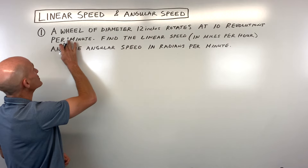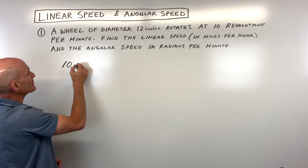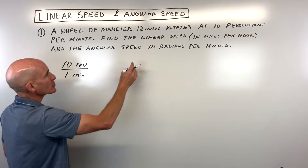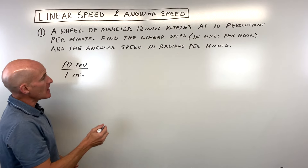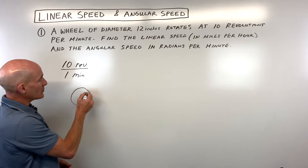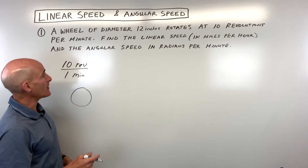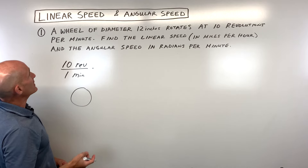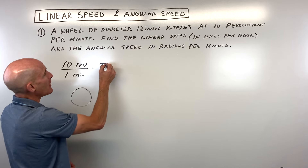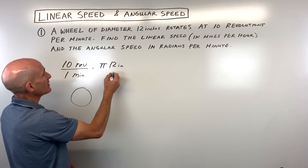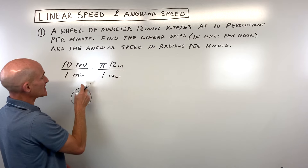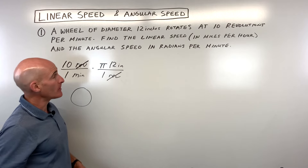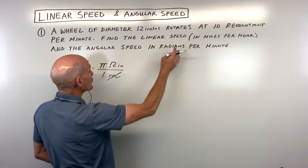We're going to start with 10 revolutions per minute — when you see the word 'per,' you're thinking divided by, so 10 revolutions divided by one minute. We're trying to convert this into miles per hour. One revolution — once around that circle — is the circumference. The circumference is pi times the diameter, so that's pi times 12 inches per one revolution, which is how far you travel in one revolution. The revolutions in the numerator and denominator cancel, leaving inches per minute.